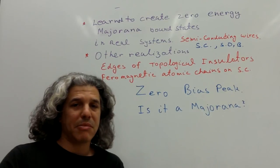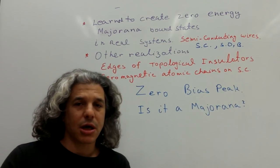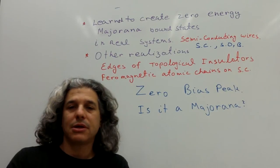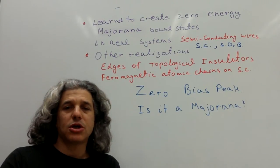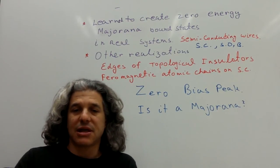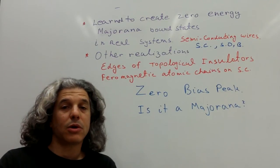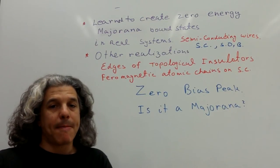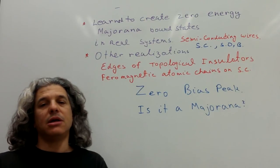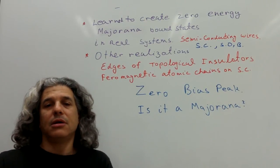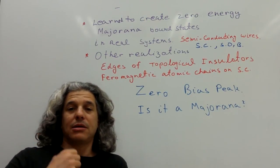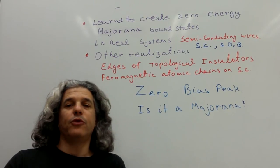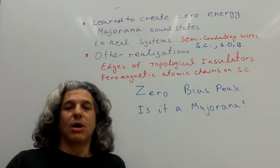The main experimental challenge is to control all the parameters of the system very carefully — the magnetic field, the chemical potential, the strength of coupling to the superconductor, and so on — so that we can create the Majoranas, manipulate them, and eventually even braid their positions. In this way, the goal is to create real quantum memory and quantum computing in the future, and hopefully also a quantum computer.